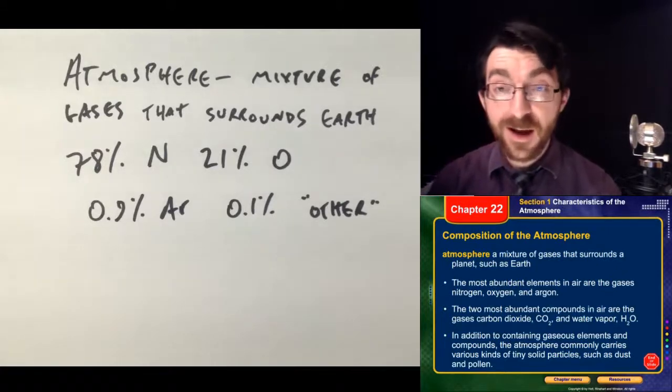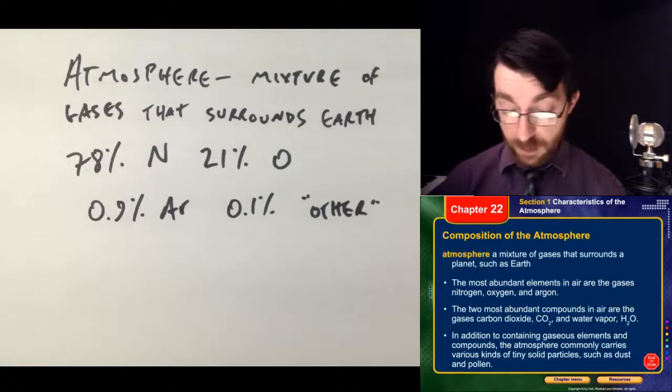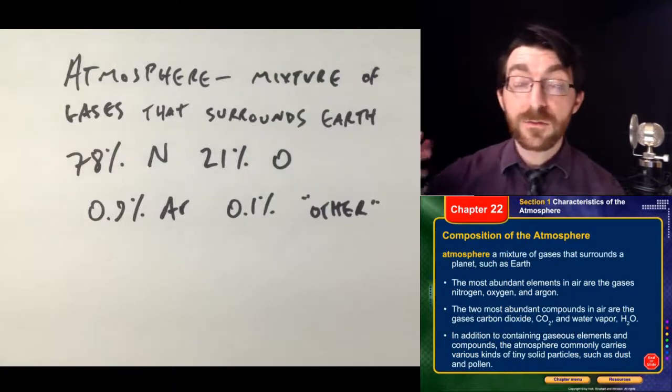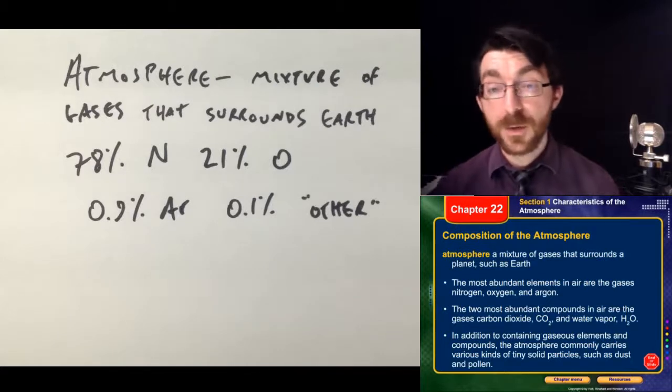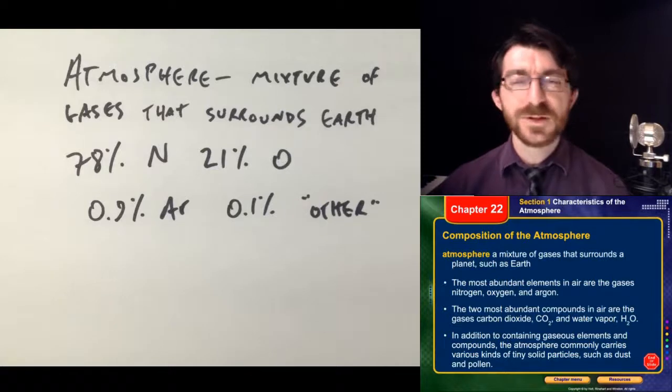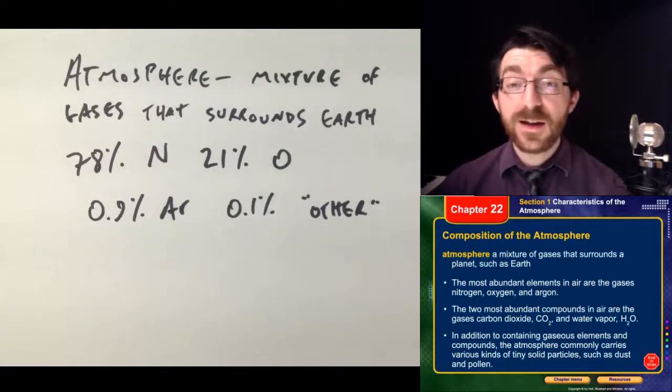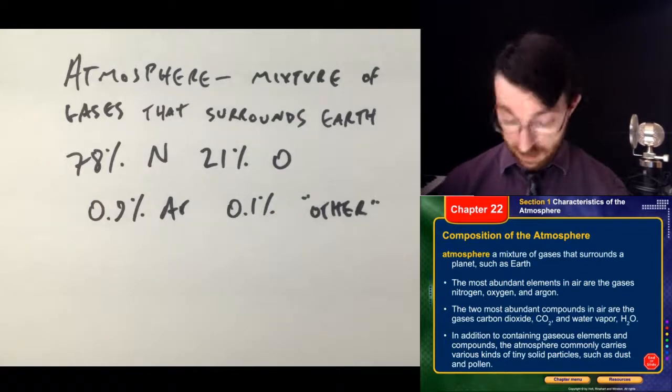So if you put up five fingers, four of those fingers are nitrogen, one of those fingers, and for today a thumb is a finger, is oxygen. That's basically the whole atmosphere. There are some traces though. That 1% is split up like this: 0.9% argon, and then 0.1% other. Other, notably, includes carbon dioxide and water vapor.